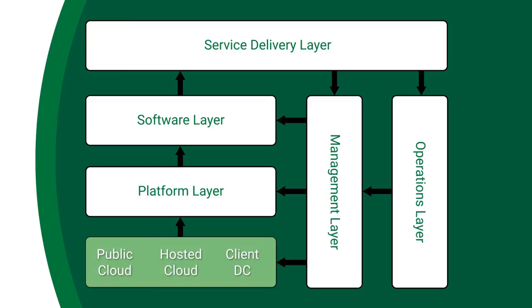Now that we have defined the architectural framework, we can fill it in with the actual collection of components and tools we are using to implement that framework. At the bottom infrastructure layer we have our traditional public cloud implementations such as Microsoft Azure or Amazon Web Services. We also have the ability to support private clouds implemented using VMware technology inside the client's data center, as well as hosted private cloud providers from companies such as SingleHub.